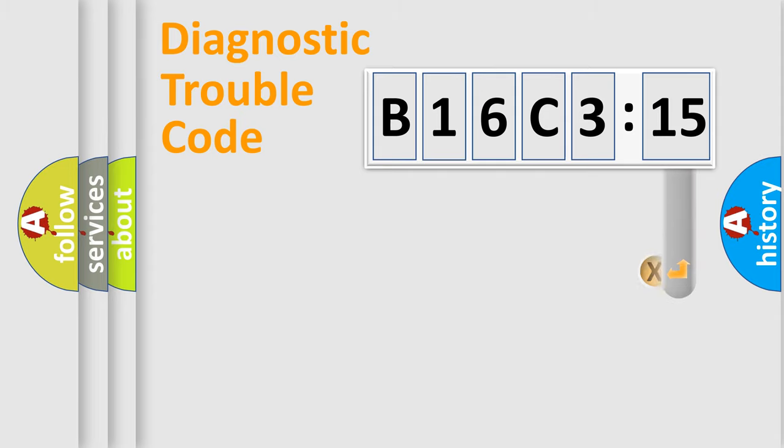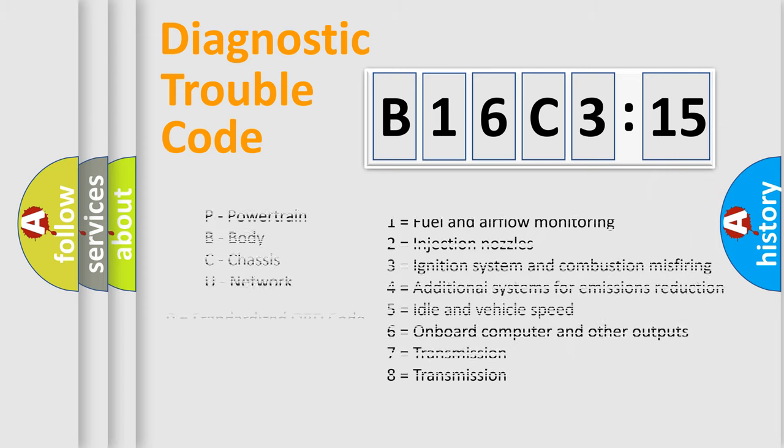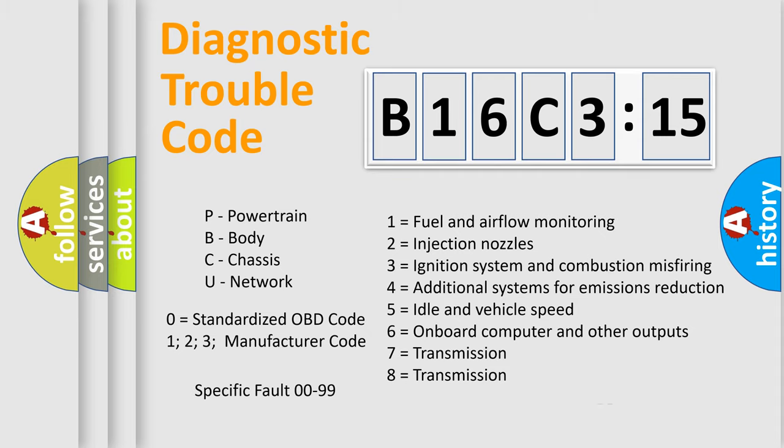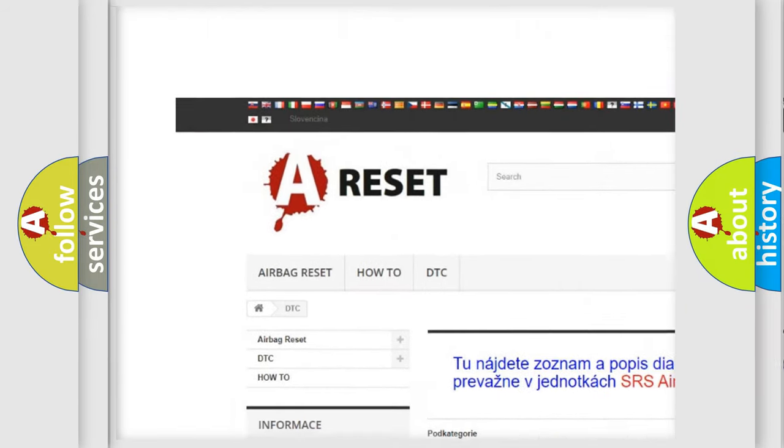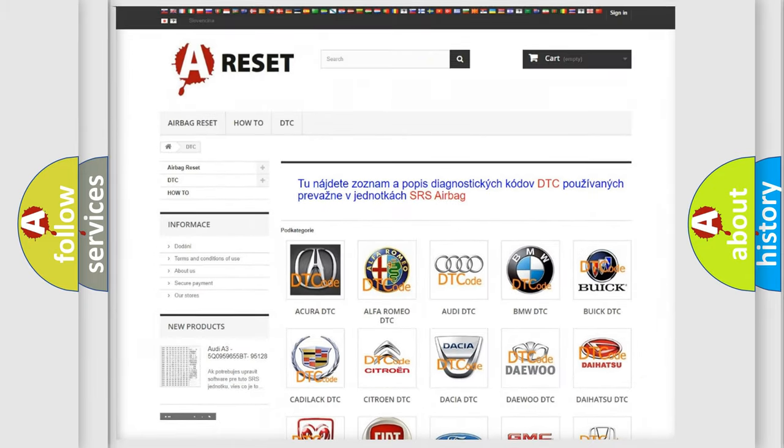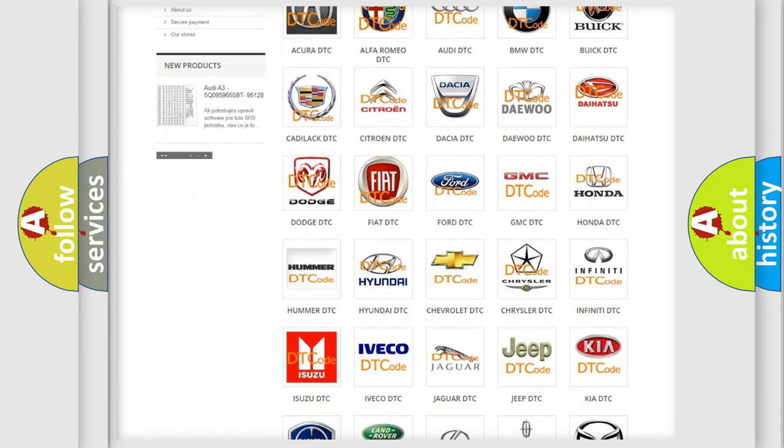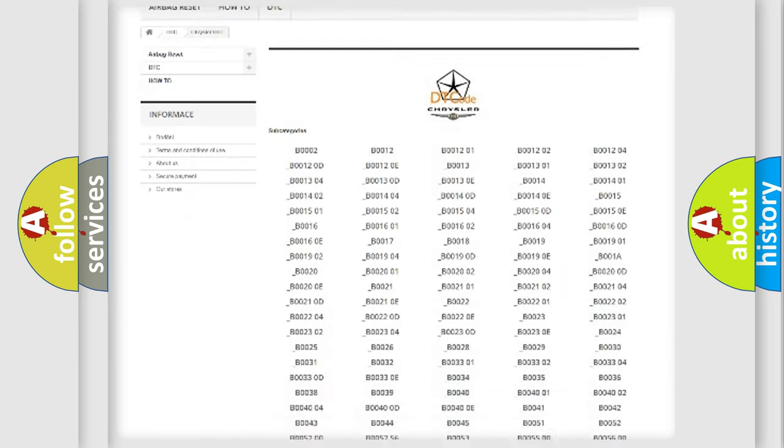Our website airbagreset.sk produces useful videos for you. You do not have to go through the OBD2 protocol anymore to know how to troubleshoot any car breakdown. You will find all the diagnostic codes that can be diagnosed in Chrysler vehicles, and also many other useful things. The following demonstration will help you look into the world of software for car control units.